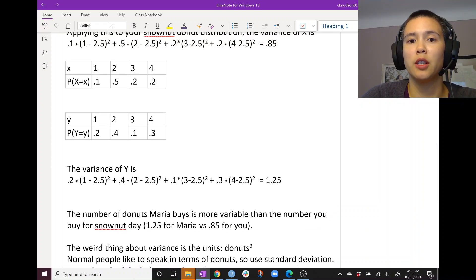So the variance for your number of donuts bought is 0.85. The variance for her number of donuts bought is 1.25. So we see that Maria's donut consumption is more variable than your donut consumption. And this makes sense because if we look at these two distributions, you have more probability packed into the center and she has slightly more packed onto one donut and four donuts, onto the two extremes. So it makes sense that her variance is higher because she has more variability in the number of donuts that she consumes.